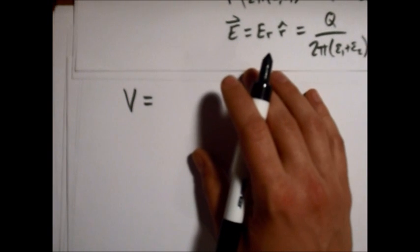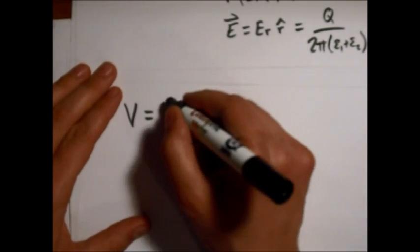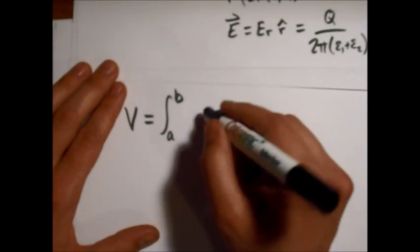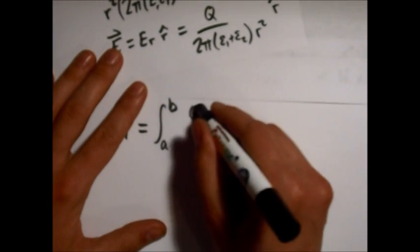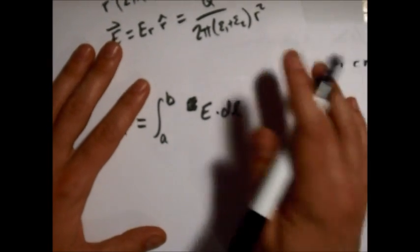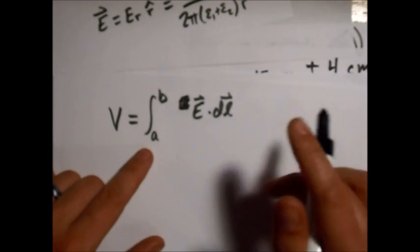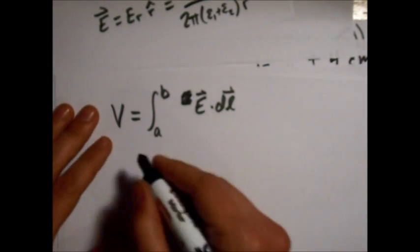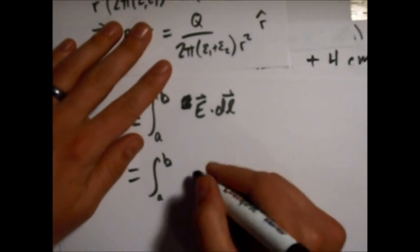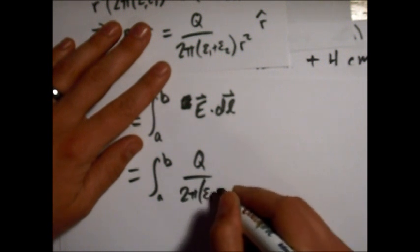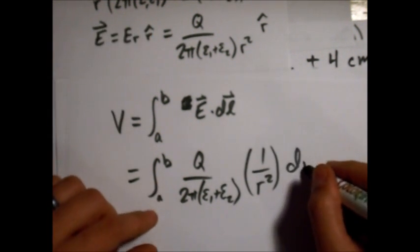We're going to integrate the electric field from A to B. I should write this out. And in this case, we'll just be going in the R, the radial direction. Okay, so if we plug in our E here, Q, 2 pi epsilon 1 plus epsilon 2, 1 over R squared, dr.